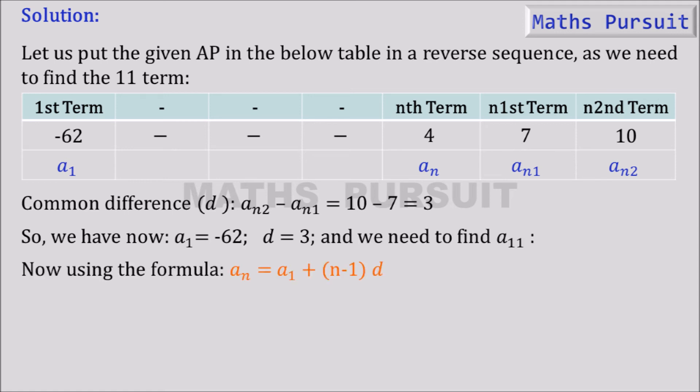Now using the formula aₙ is equal to a₁ plus (n-1) into d. So a₁₁, because we are going to find the 11th term, for that reason I have considered a₁₁. So a₁₁ is equal to -62 plus (11-1) into 3, or a₁₁ is equal to -62 plus 10 into 3, or a₁₁ is equal to -62 plus 30, or a₁₁ is equal to -32.